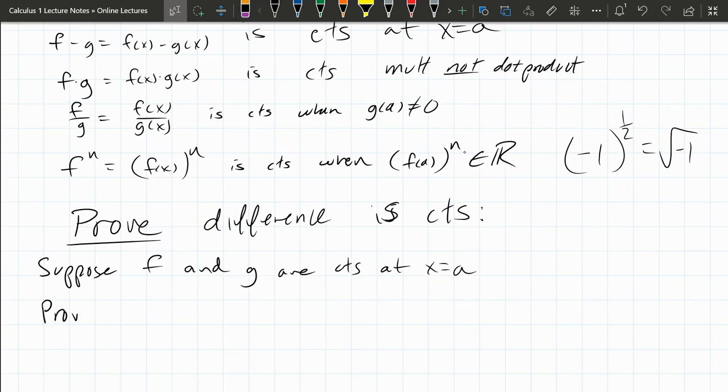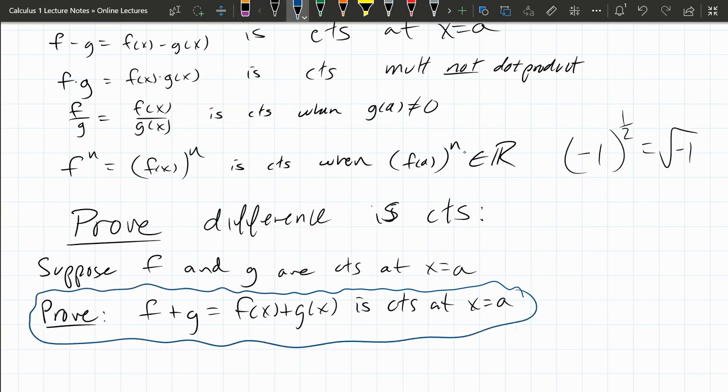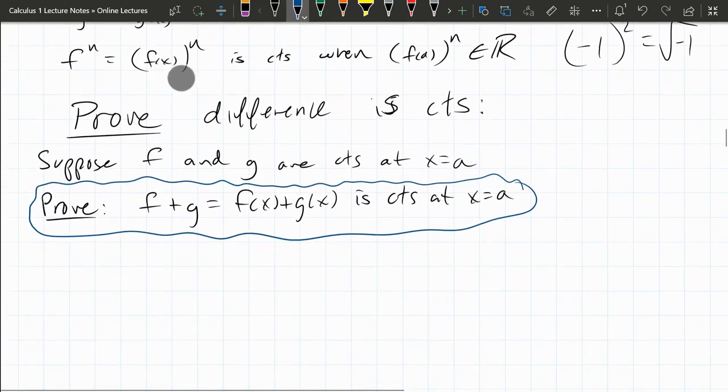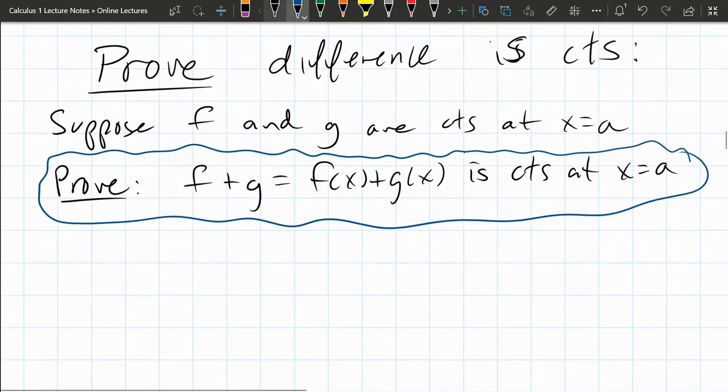We need to prove or show that f plus g, which is f of x plus g of x, is continuous at x equals a. Now we haven't shown this, so I'm going to put it inside of this little cloud bubbly thing. That's what we want to show. And all we have to work with is knowing that f and g are continuous at x equals a.